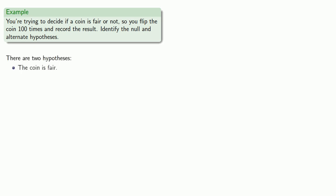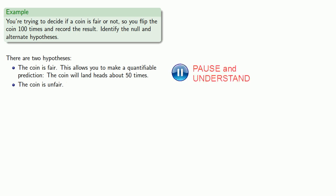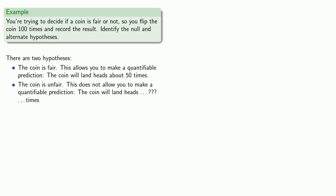The two hypotheses are: the coin is fair, or the coin is unfair. The first question is: will one of these allow us to make a specific quantitative prediction? This first hypothesis will — it allows us to make a quantifiable prediction: the coin will land heads about 50 times. The second hypothesis does not allow us to make a quantifiable prediction: the coin will land heads some unknown number of times. So 'the coin is fair' is going to be our null hypothesis.